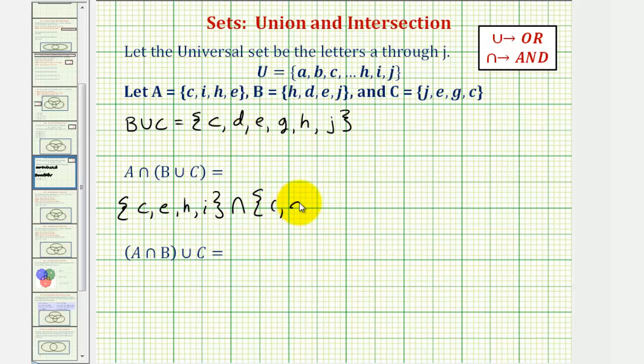which contains C, D, E, G, H, and J. So we're looking for the intersection, which means we're looking for the elements that are in this first set and also in the second set. So we're looking for the elements they have in common.